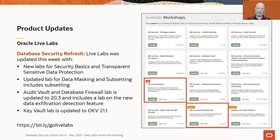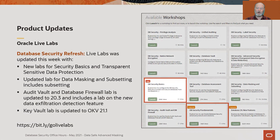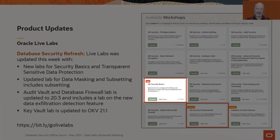If you haven't worked with live labs before, I suggest you go to https://bit.ly/golivelabs. Take a look at what we've built for you. There are two labs in particular I want to call to your attention — you'll see these if you filter on database security. One is the database security basics lab, which walks you through what we consider to be the baseline security requirements for an Oracle database. This three-hour lab combines multiple individual labs like privilege analysis, unified auditing, and native network encryption into one lab.